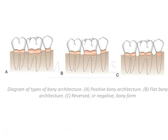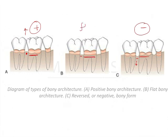Looking at these images, in the first image the interradicular bone is above or more coronal compared to the radicular bone — this is positive architecture. In the third image, the interradicular bone is below or apical to the radicular bone — this is negative architecture. In the remaining image, the interradicular bone and radicular bone are at the same level — this is flat architecture.